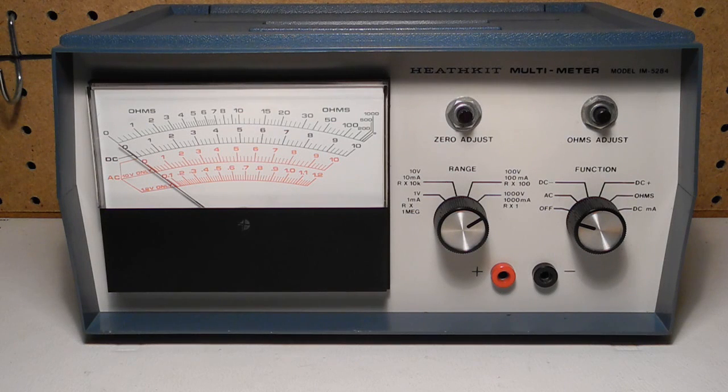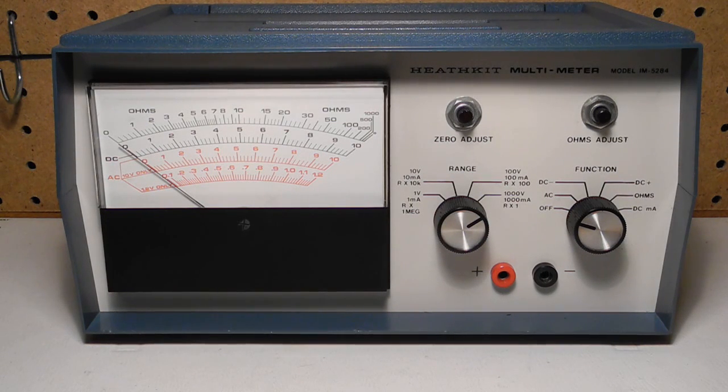The IM5284 multimeter is similar in design and features to a VTVM, except that all of the circuitry is solid state and uses transistors. It was made from 1977 to 1983, and the cost, like the rest of the 5280 series, was typically US $49.95.